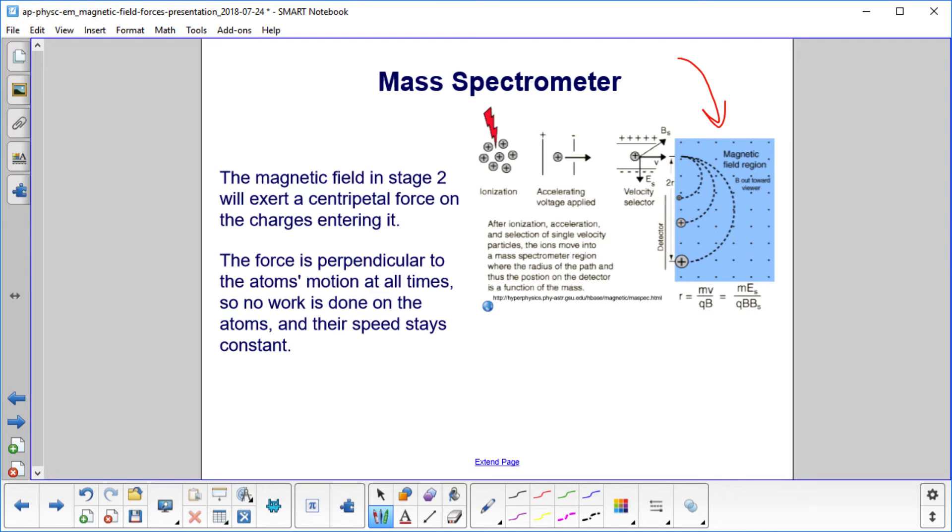Here's where you ionize your particles, whether they're atoms, molecules, whatever. You accelerate them with a potential difference, and you'll see some of the homework problems with that. The accelerating voltage is equal to the electric field times the distance that they're accelerated. You have your velocity selector, and finally you have stage two over here. So everybody's moving with a constant speed.